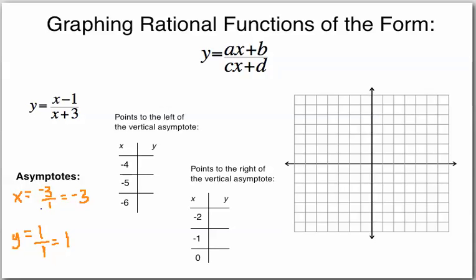Welcome to graphing rational functions of the form y equals ax plus b over cx plus d. If you haven't looked at the video about analyzing rational functions of this form, you should go back and look at that because we go over how to find these asymptotes. So with our equation, the vertical asymptote is x equals negative d over c, which gives us x equals negative 3, and our horizontal asymptote is y equals a over c, which gives us y equals 1.